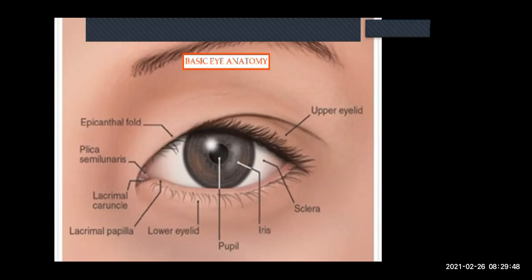So this is basic anatomy of the eye - nothing too serious, nothing to stress yourself out about, just as a little reminder. Do you remember what all the parts of the eye are? We start from the eyelid, the epicanthal fold, the lacrimal area, lower eyelid, pupil, iris, the cornea, the sclera, the conjunctiva underneath.